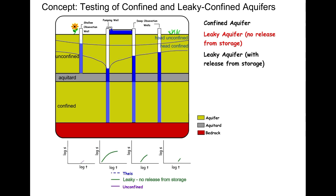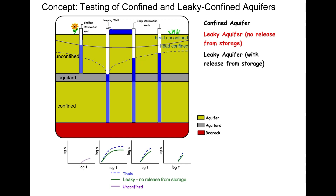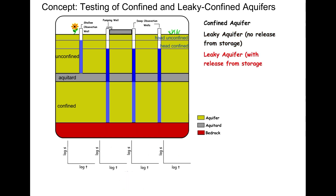This downward flow results in some drawdown in the unconfined aquifer that continues indefinitely at an ever slower rate as the area of leakage expands. For comparison, the dashed blue line on the graphs shows drawdown for the fully confined condition.